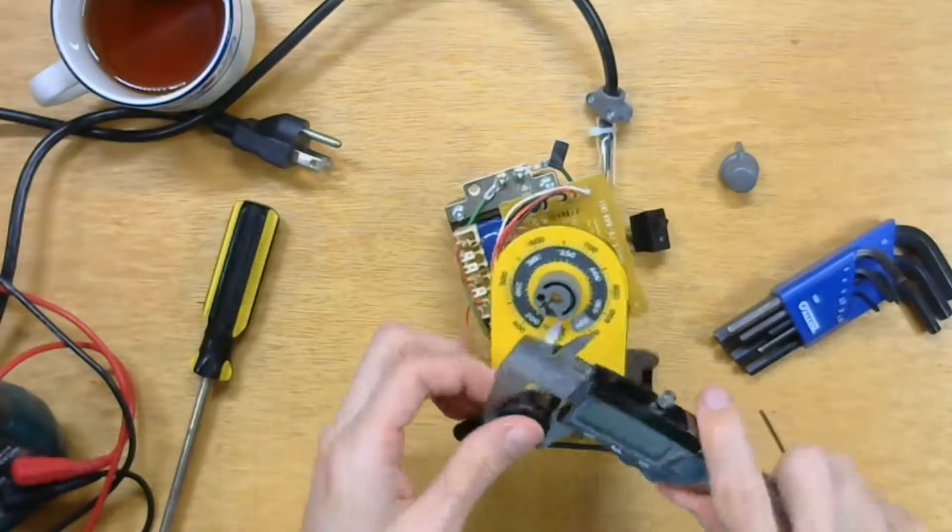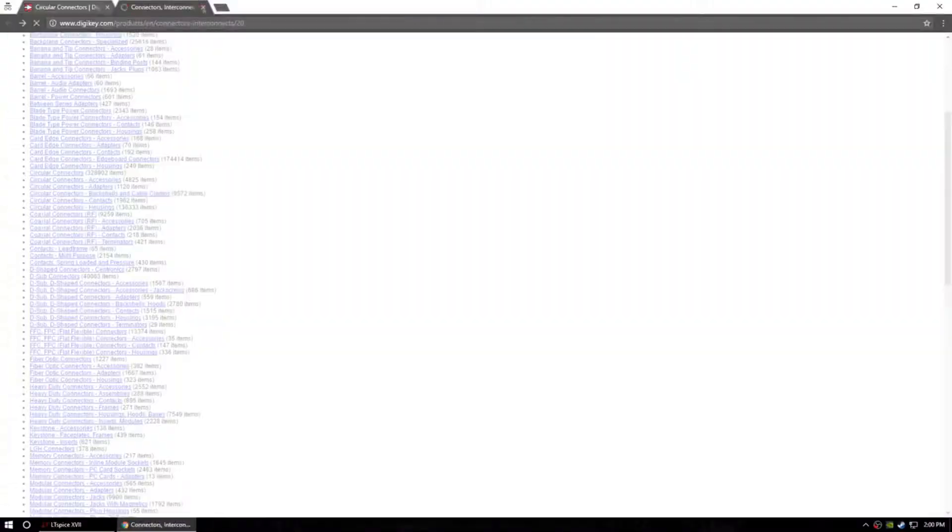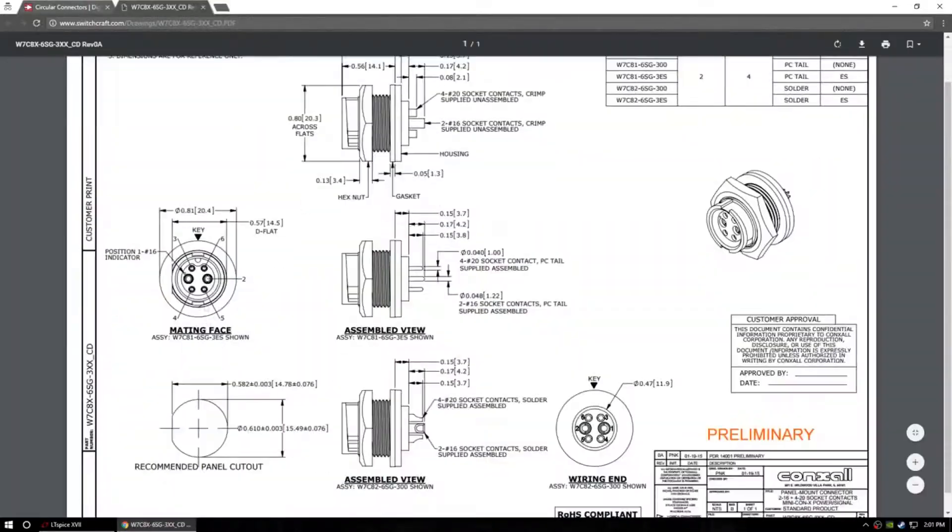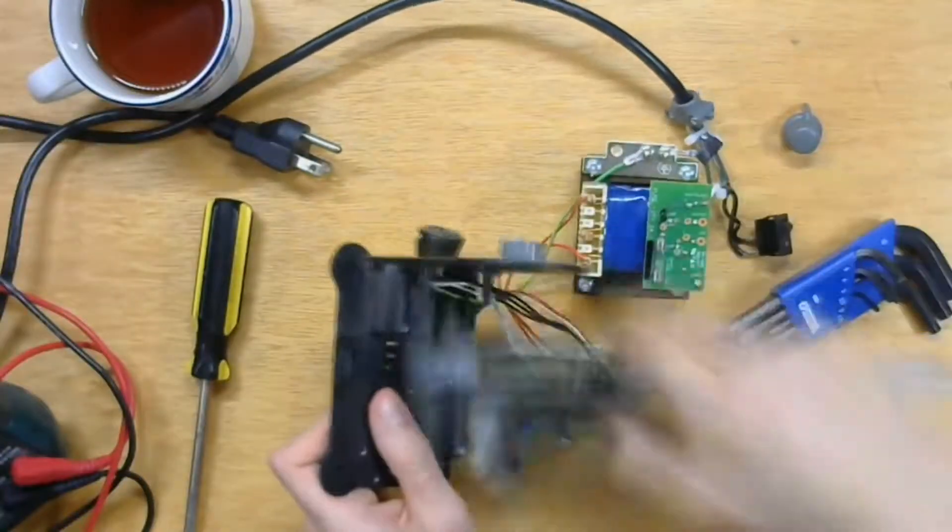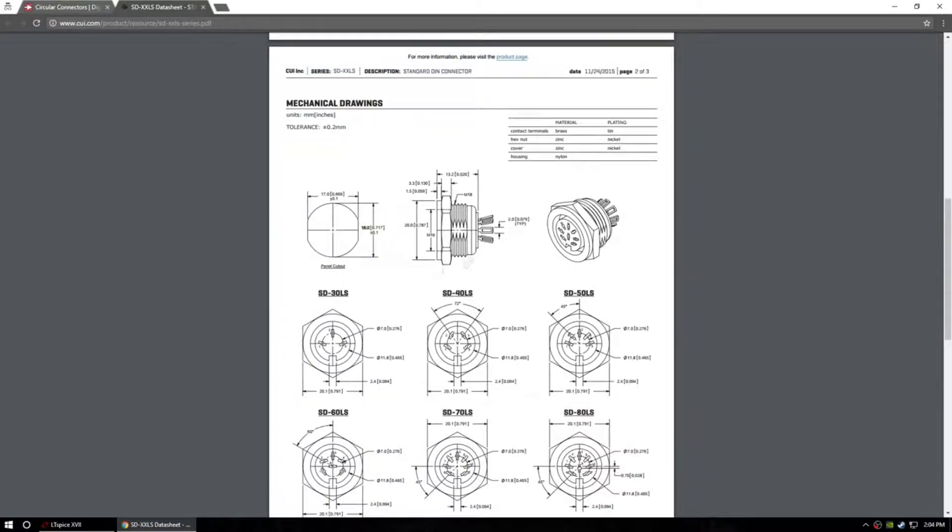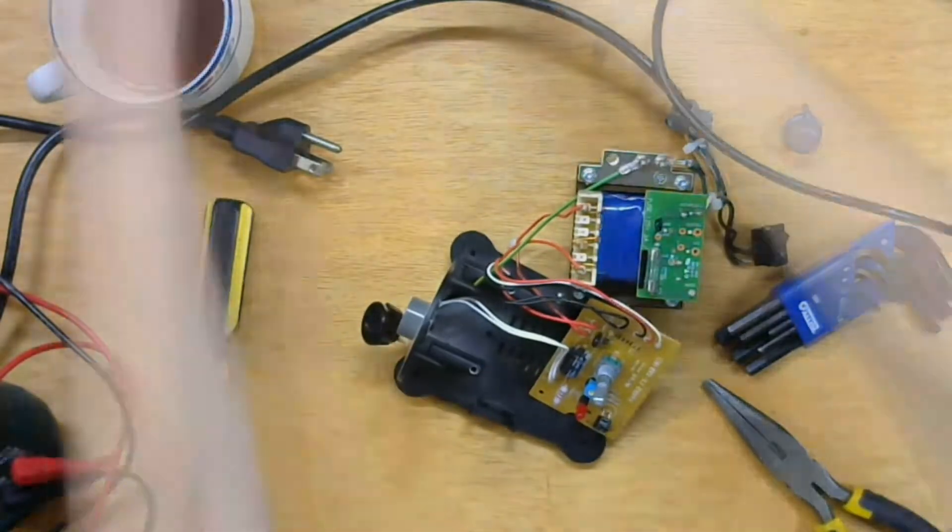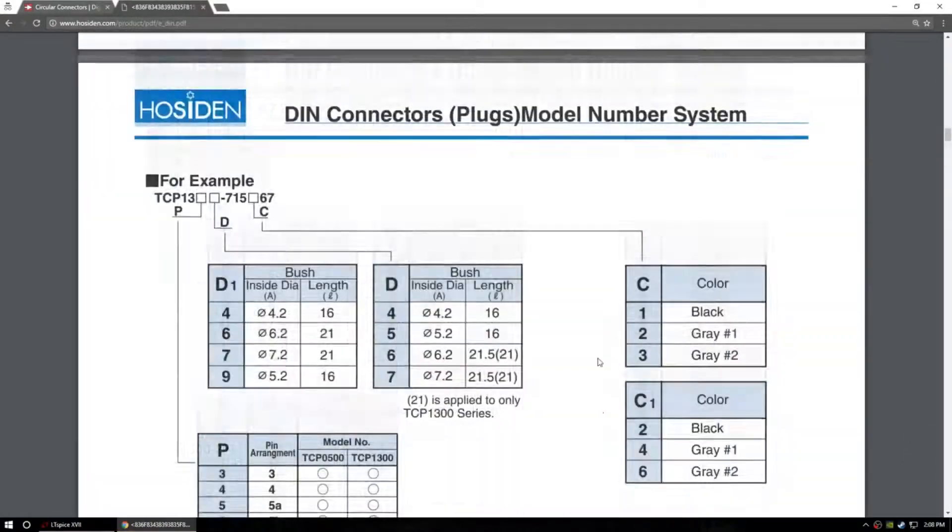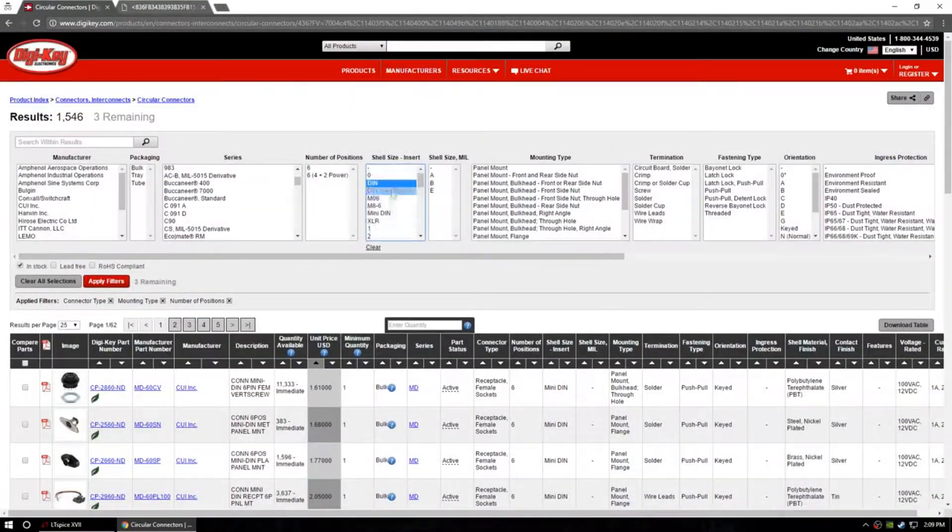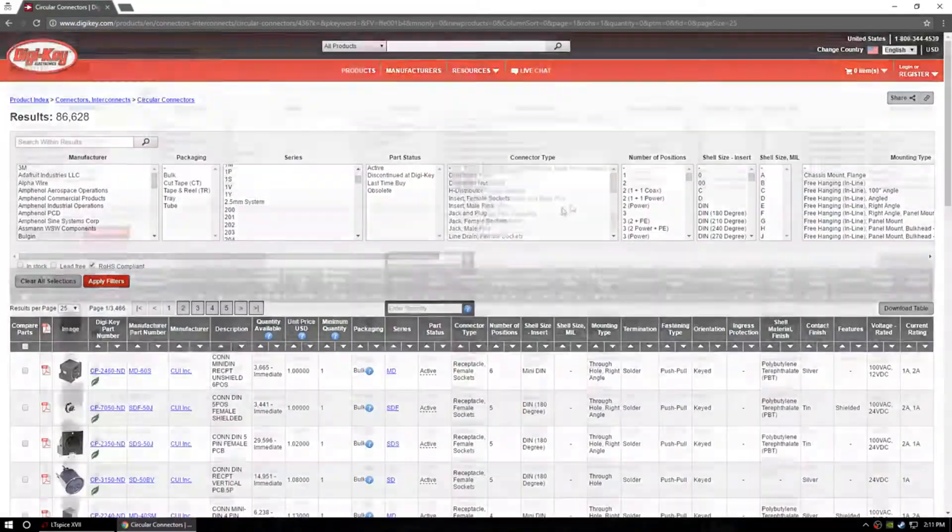After measuring the connector diameter, length, and pin count, I looked on Digikey to find a replacement connector. The connector used is a standard connector called a DIN connector. More specifically, this soldering iron uses a DIN-6 connector, meaning that there are six positions or pins belonging to the connector.